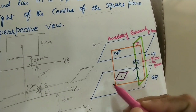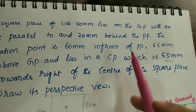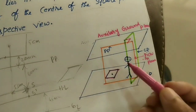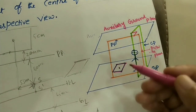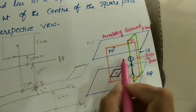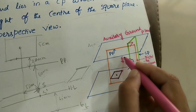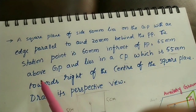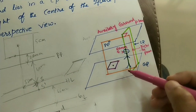Now this is the given position of the square. One more data is given — the station point. Station point is the observer's eye. The observer is 60 mm in front of the PP, so the gap between the picture plane and his eyes is 60 mm. Additionally, the station point is 65 mm above the GP — from the ground plane, his eye or station point is 65 mm above.